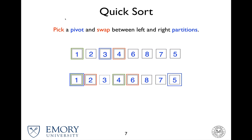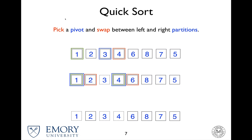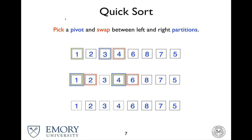Now let's move on to the right partition. Four is the pivot and six and five are the pointers. Six is already in place. The blue box has to move to some value that's actually smaller than the pivot, so it goes all the way to four. Since they've crossed, you swap between the pivot and the right partition pointer — and nothing changes. So in this layer nothing really happens, except now you've found two more pivots that are in place.